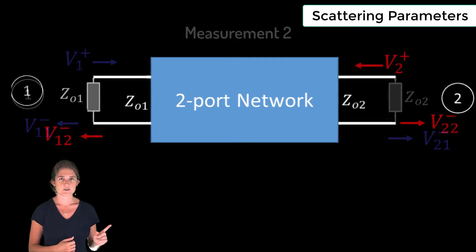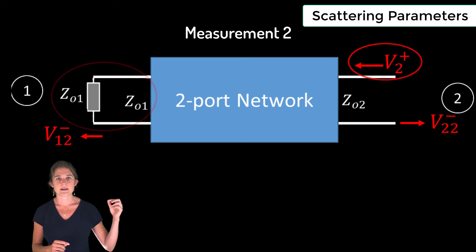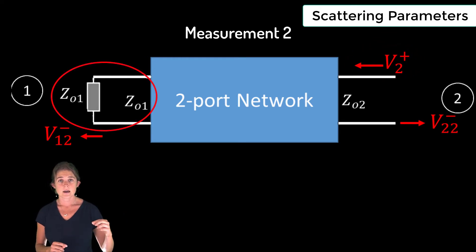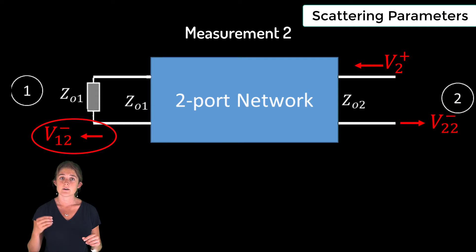This is the second measurement we need to characterize a two-port system. Note that here we're only driving the second port. Also note that we must match terminate the first port. Again, if the first port is not match terminated for this measurement, part of the signal leaving port one will reflect at the load and come back into the system as an input. From this measurement configuration, we can obtain V22, the amount that is reflected from input at port two, and V12, the amount that is transmitted from input at port two to port one.